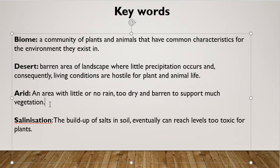Another key word is 'arid'. An arid area has little or no rain, and is too dry and barren to support much vegetation. Later in this lesson we'll come across the word 'aridisols', which just means arid soil — a soil in an area that has little or no rain and is too dry and barren to support much vegetation.